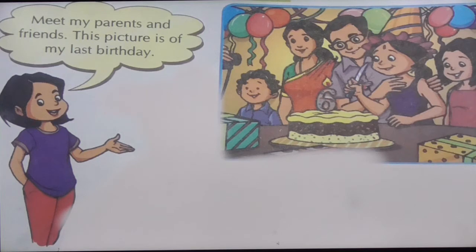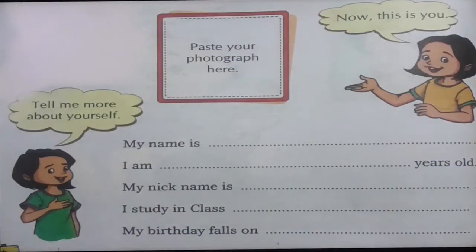That is a photo where she has her mother, father, and friends. Now, what do you have to do? Have you seen this picture? On page number six, you have a picture in your book. There is a box. In that box, you have to paste your own photograph — you have to paste yourself in your own photograph.